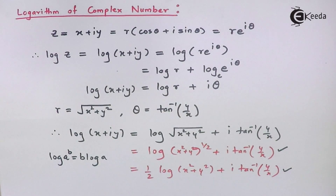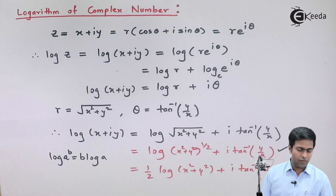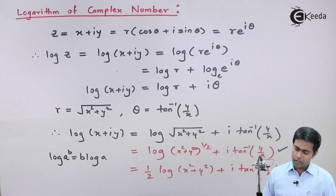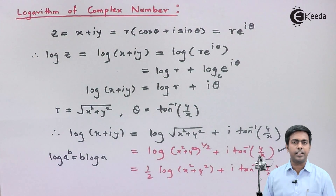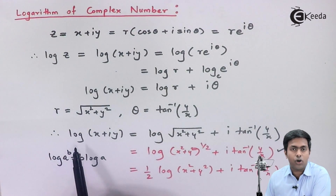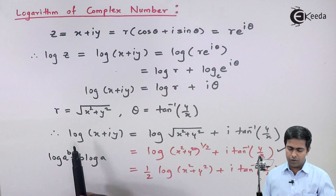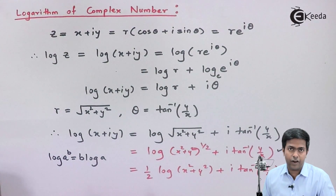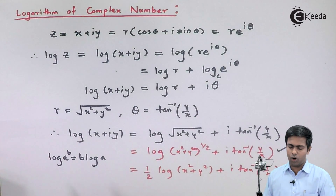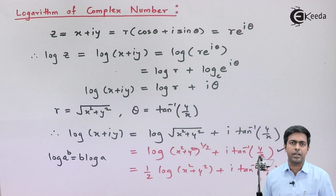Now, this formula we call the principal value of logarithm, denoted with a lowercase log. If we want the general value of log of x plus iy, it is denoted by capital L. The formula computed so far, log of x plus iy, is the principal value, while the general value uses capital L.